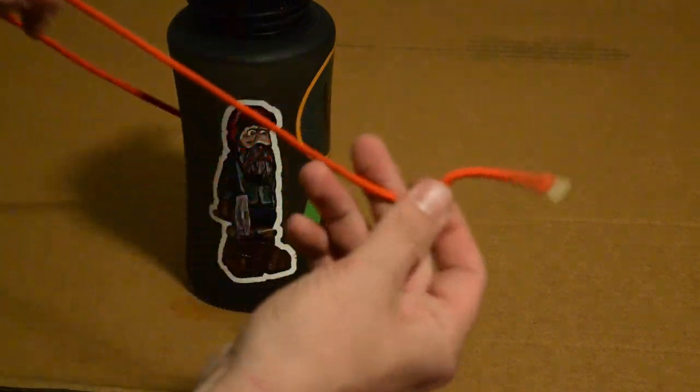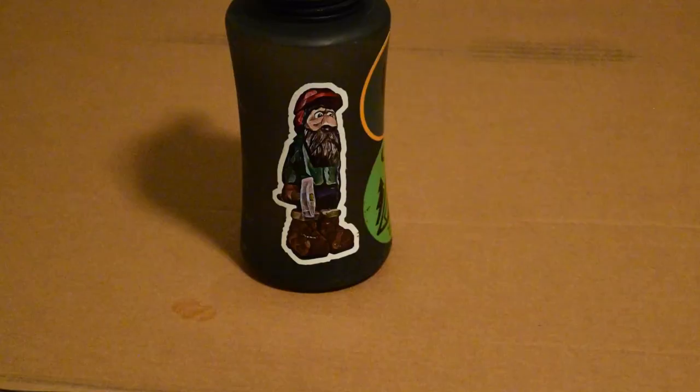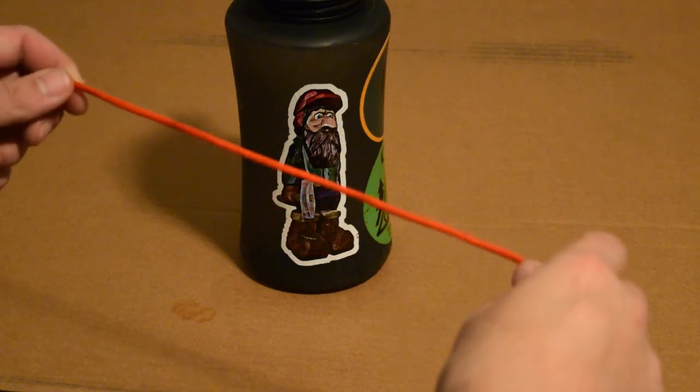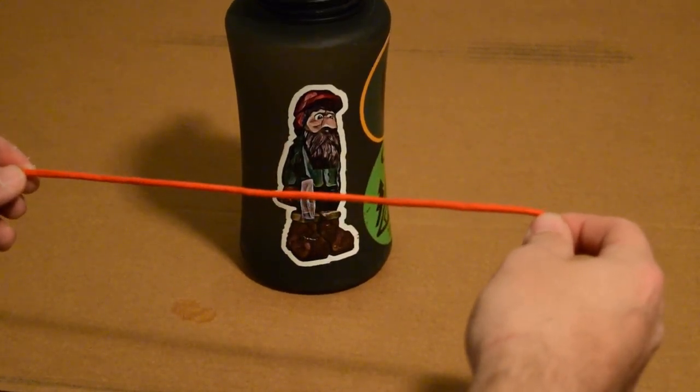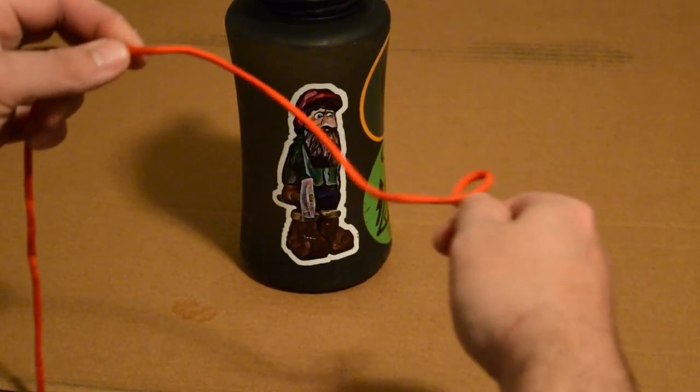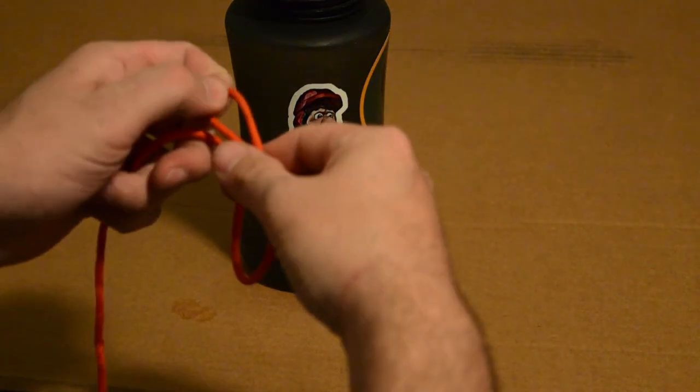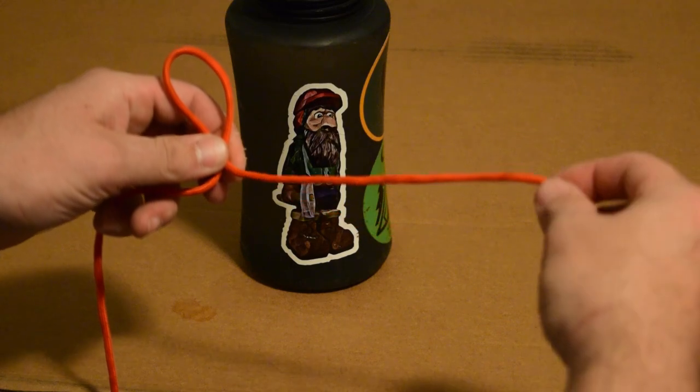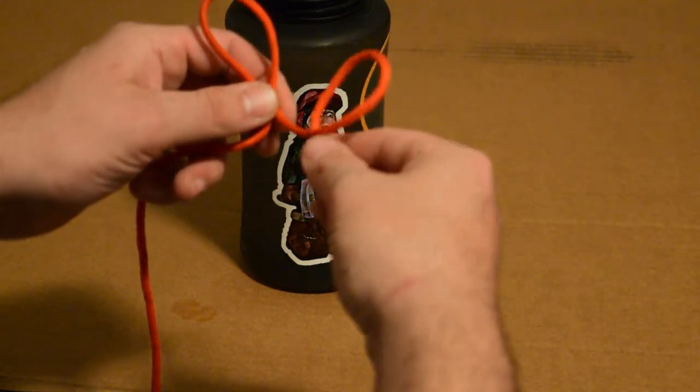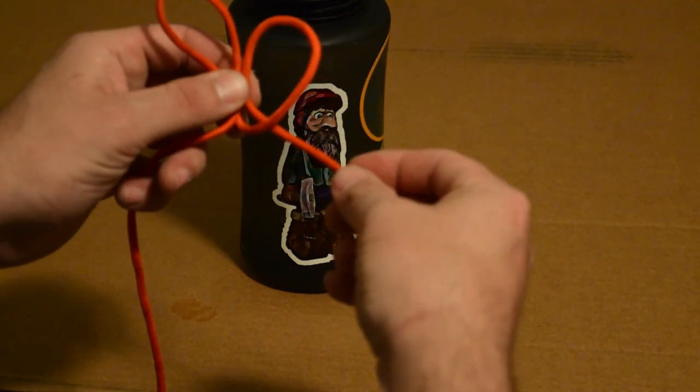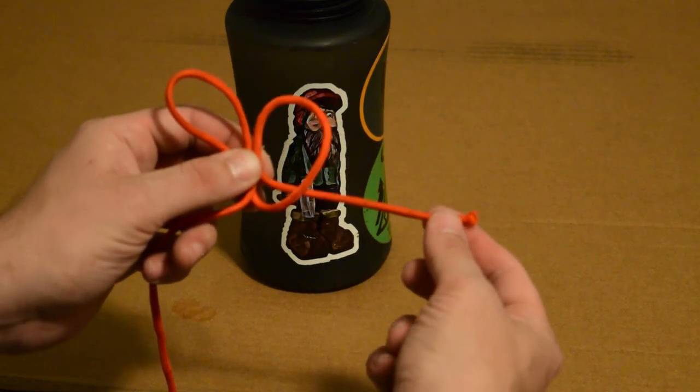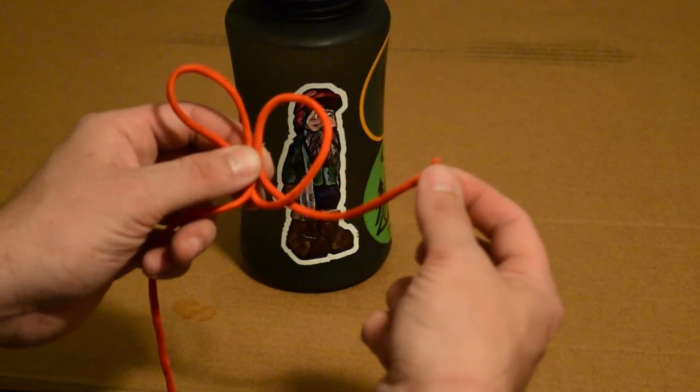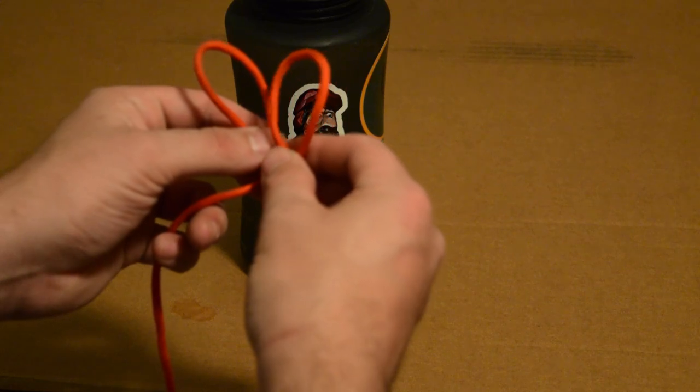Alright, so our third and final knot is going to be called the clover hitch. And all we're going to do is twist it like this so we have our loop. We got one loop. Now what we're going to do is do the same loop again right below it. So you want to have probably a good three to four inches at the very end.